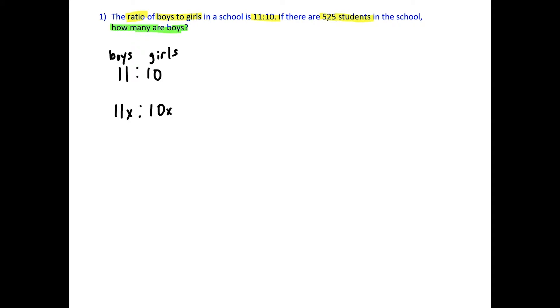So we could also say this is the ratio of 11x to 10x. Because if there's 525 students in the school, if we just did 11 plus 10, 21 students, that's not enough. So by multiplying by x, this allows us to set up the equation that there are 11x plus 10x students in total.